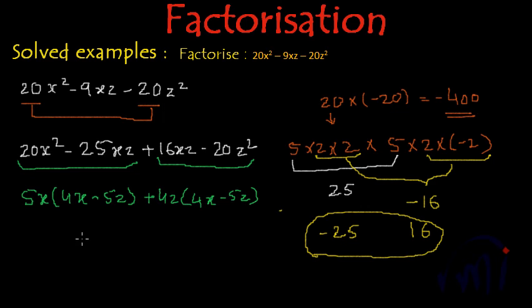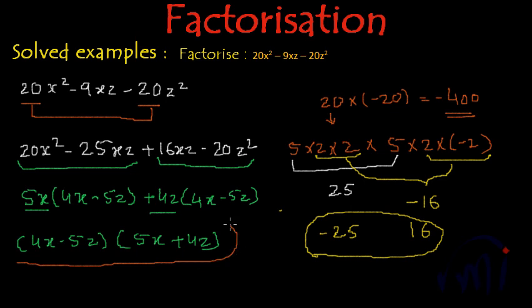And now we have 2 terms from where we can take 4x minus 5z common and inside the bracket we will be left with this 5x plus 4z. So these are the factors of 20x square minus 9xz minus 20z square.